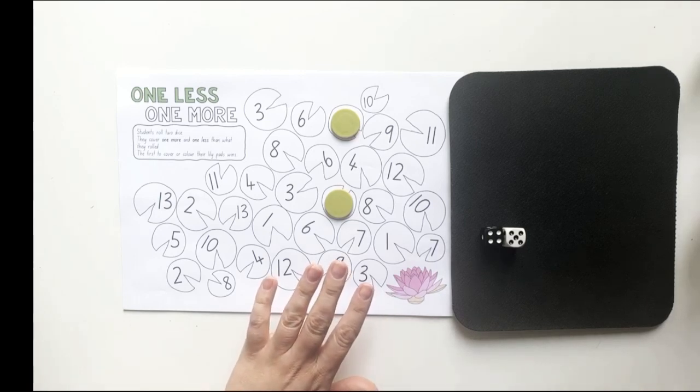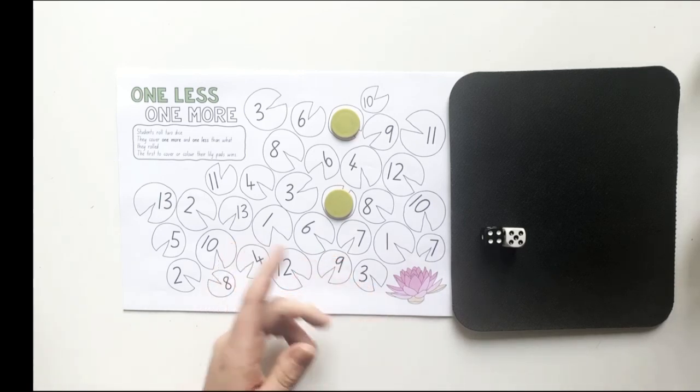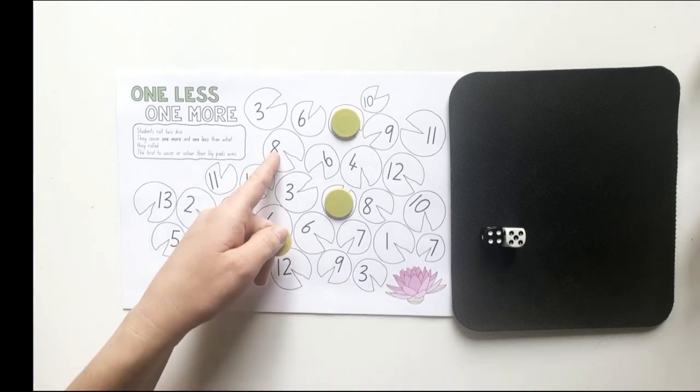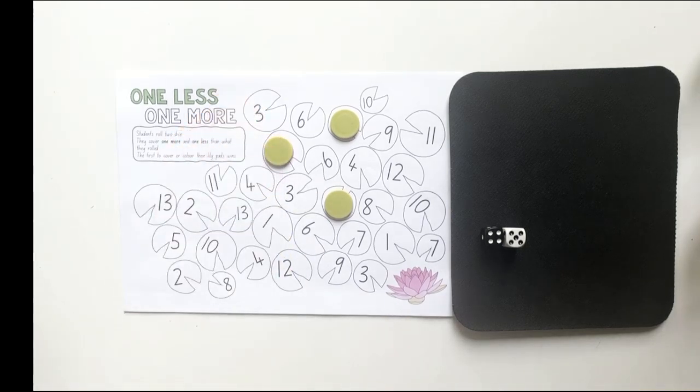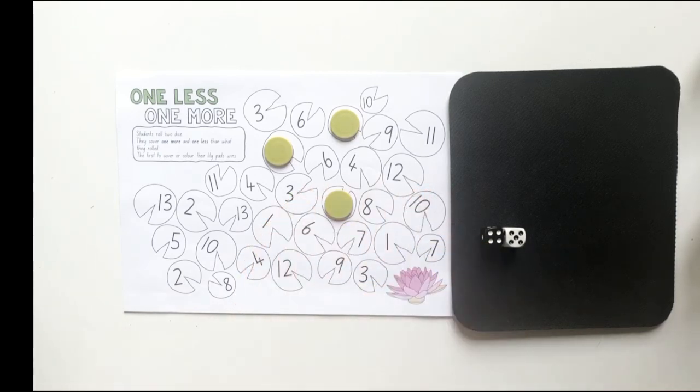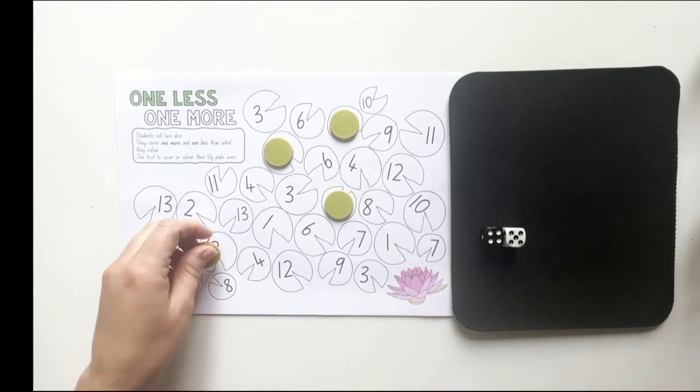Now, remember, I'm not covering up nine. I'm covering up one less and one more. What's one less than nine? If I'm at number nine and I drop back one place, I get to eight. Here's a number eight. So I'm going to cover it up. What's one more than nine? If I'm at number nine and I increase by one, I get to number ten. Here's a ten. I'm going to cover it up.